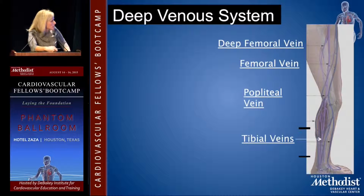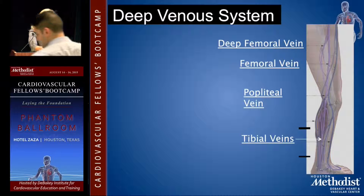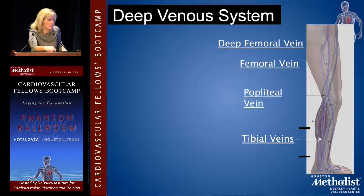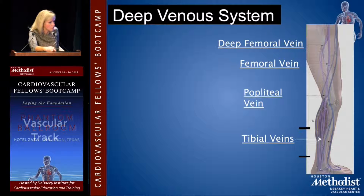The deep venous system starts down in the foot and the calf. You have venous sinusoids in the soleus muscle — the soleal veins are deep veins. If there's a DVT in the soleal veins, it may be treated differently than other DVTs because it's below the knee, but it is a deep venous thrombosis. You also have your tibial veins going toward the popliteal vein, the femoral vein, and the deep femoral vein.